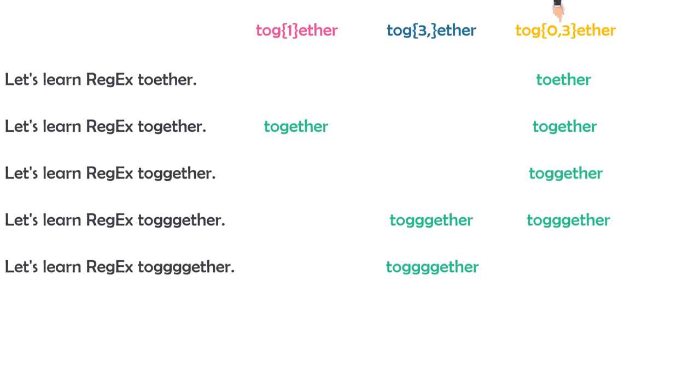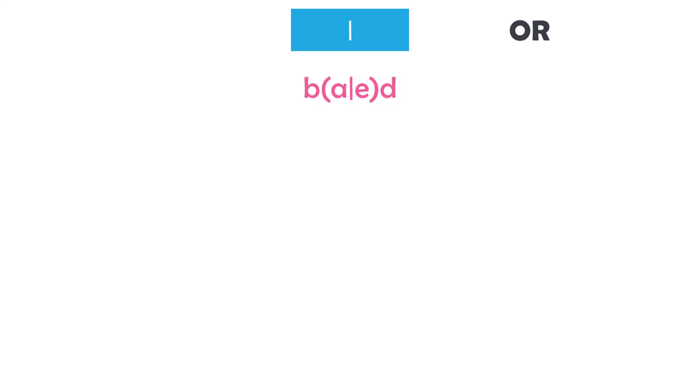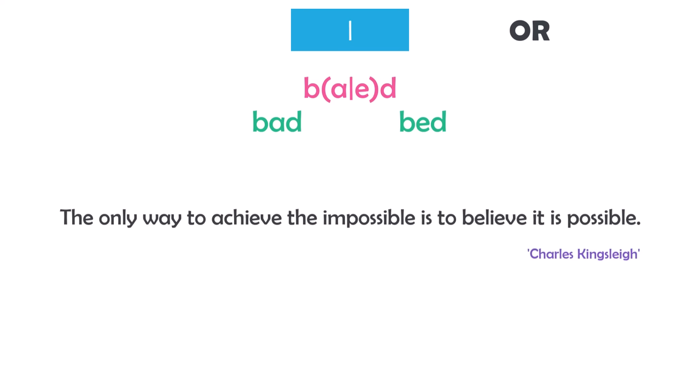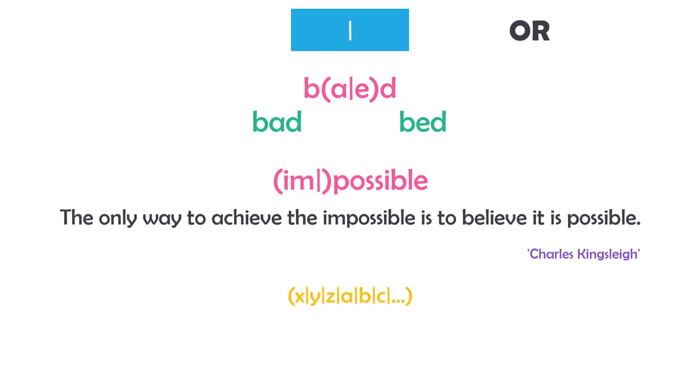We can also use the vertical bar pattern, which acts like a Boolean OR. For example, a pattern B(a|e)d will find both 'bad' and 'bed'. Another example: to find both 'possible' and 'impossible', the pattern (im)?possible uses vertical bar to say the prefix 'im' is either present or absent. We can have more than two options with vertical bar, and it can also be used between two full expressions.